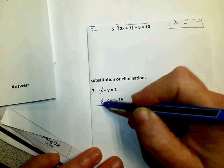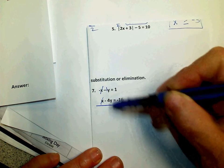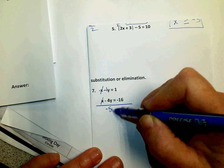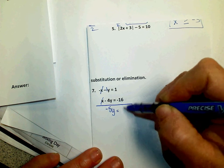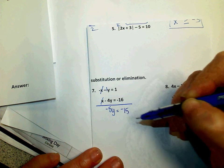Negative 1x plus x, gone. Negative 1 plus negative 4 makes negative 5y. 1 plus negative 16 is negative 15.